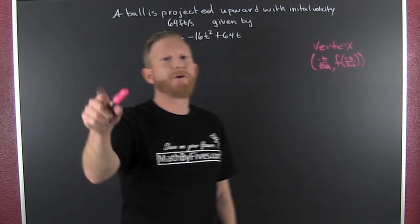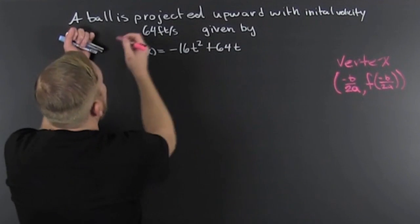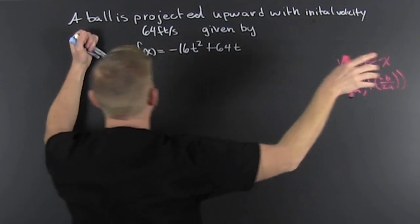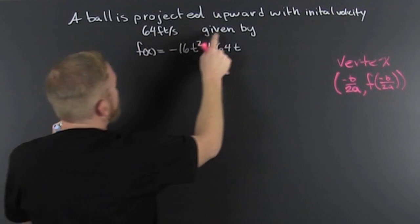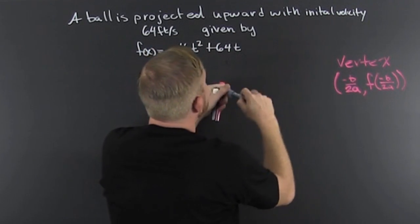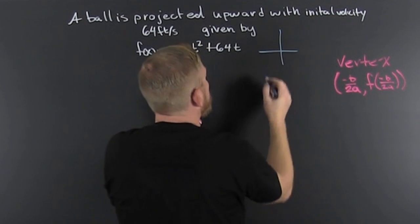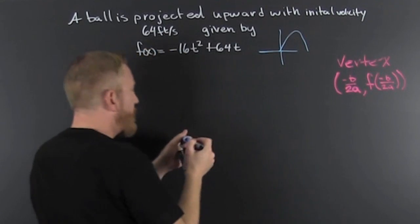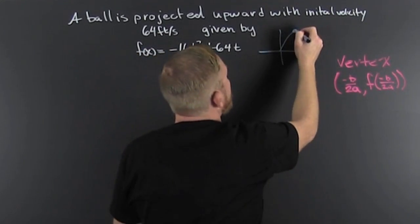The ball problem: a ball is projected upwards with initial velocity of 64 feet per second, given by this function. They throw it up and it comes down. What do we want to do? We want to find the maximum height.